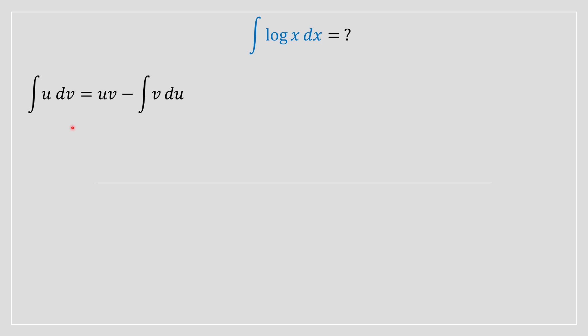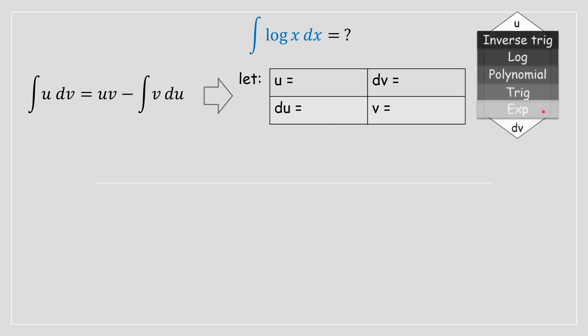At this stage we have to find our u and dv variables and assign them. The way we do that is we set up a little table as shown on your screen, and we use this special chart. This chart will help us determine which variable corresponds to u and which corresponds to dv.